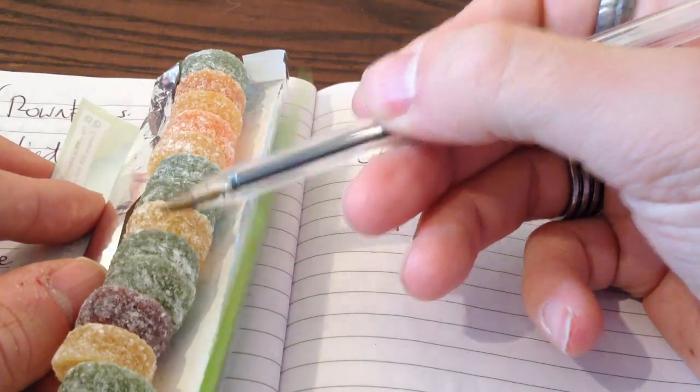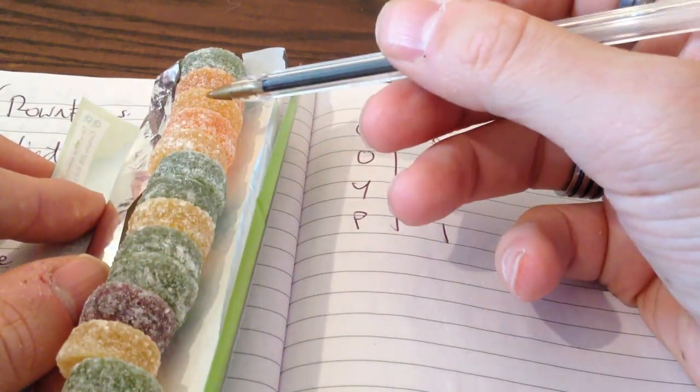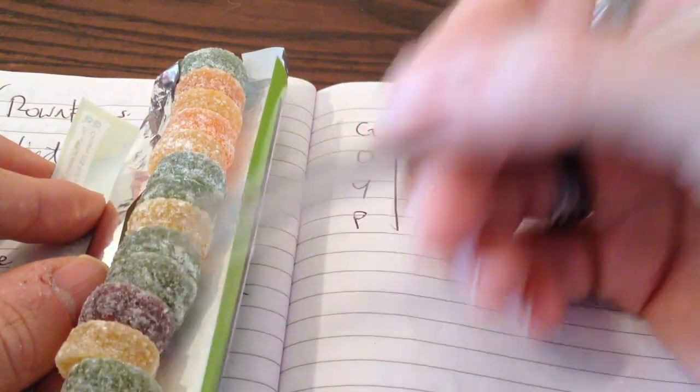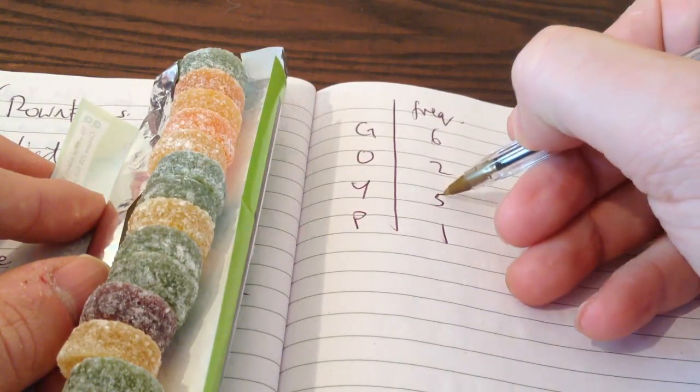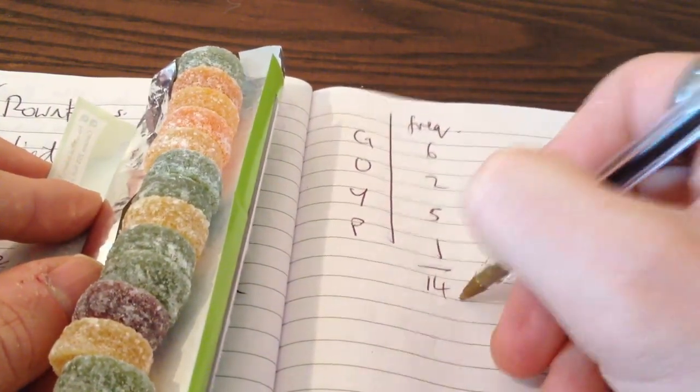So two, four, six, eight, ten, twelve, fourteen sweets. Yep, and I've got six, eight, thirteen, a total of fourteen here.